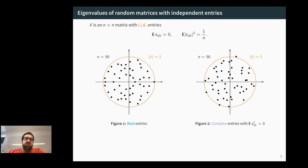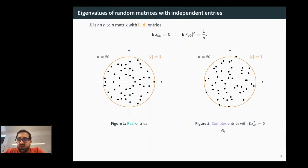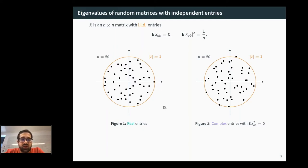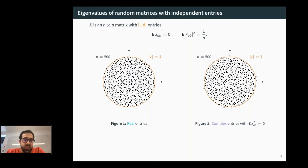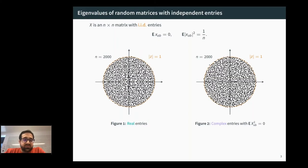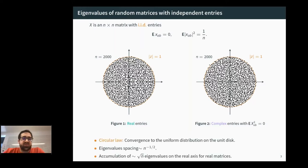Here I plot the eigenvalues of a 50×50 matrix. On the left-hand side is the spectrum of a matrix with real entries; on the right-hand side is the complex case. You can already see an interesting feature of the real case: the spectrum is symmetric with respect to the real axis, so each eigenvalue comes in a conjugate pair. As the matrix size increases, eigenvalues tend to be uniformly distributed over the unit disk — this phenomenon is called the circular law.